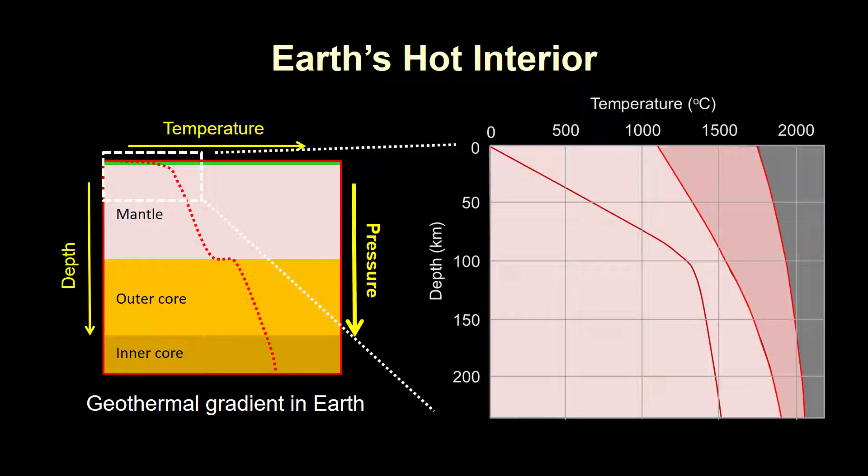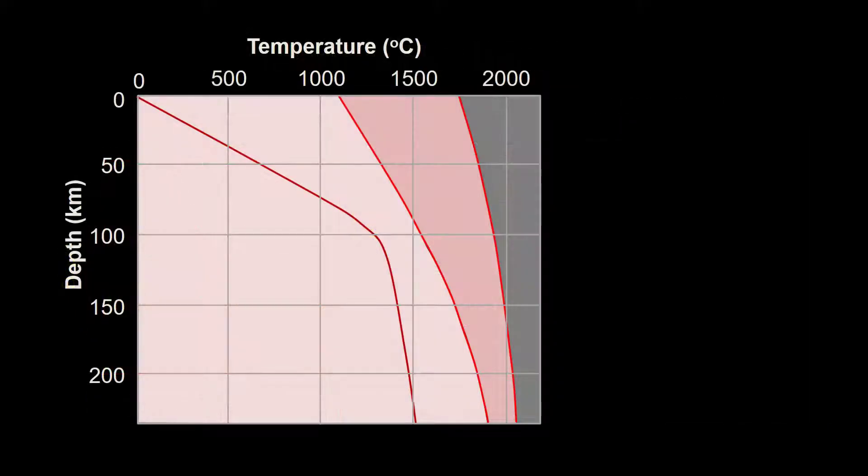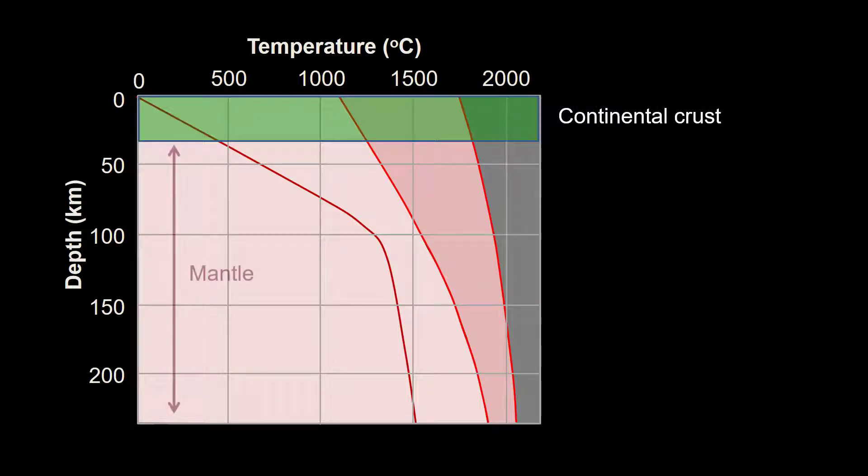We're going to focus on the upper few hundred kilometers of Earth. This is where most of the melting is going to take place. And we're going to use this graph to show how temperature varies with depth. On this figure, the oceanic crust would be up here. The continental crust would be about this thick. And the rest of the graph would represent rocks in the upper part of the mantle, including parts of the lithosphere and the asthenosphere.